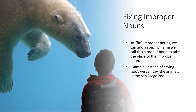Let's talk for a minute about 'fixing improper nouns.' I don't know if they necessarily need to be fixed, but just to say — if you hear something is improper, many people would say you need to fix it. So this is what we mean by fixing an improper noun: to fix improper nouns, we can add a specific name — what we would call the proper noun — and it would take the place of the improper noun. For example, instead of saying 'we're going to the zoo,' we can say 'the animals at the San Diego Zoo.' And even looking at this picture, to make 'the boy' a proper noun, we would tell you the name of the boy. Make sense?